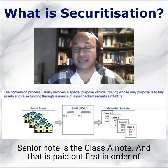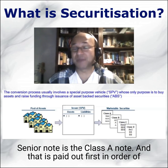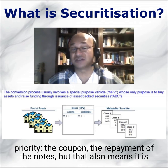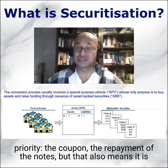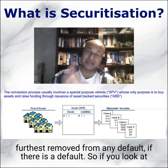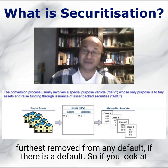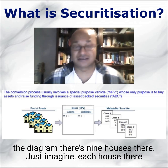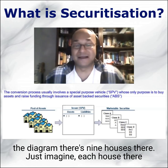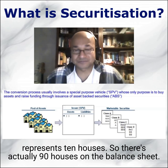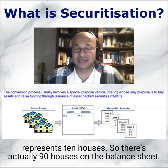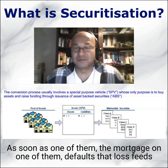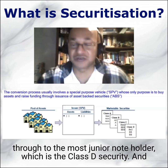In this example, the senior note is the Class A note, which is paid out first in order of priority — both the coupon and the repayment. That also means it is furthest removed from any default. Looking at the diagram, there are nine houses — imagine each represents ten, so there are actually 90 houses on the balance sheet. As soon as the mortgage on one of them defaults, that loss feeds through to the most junior noteholder, which is the Class D security.